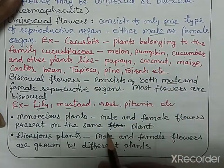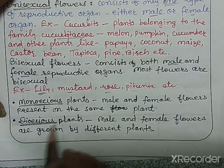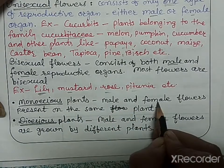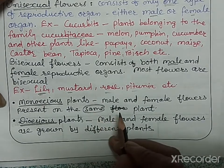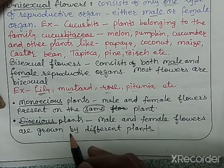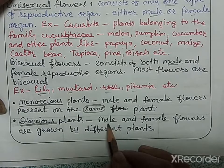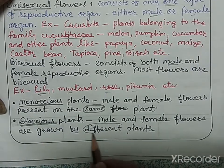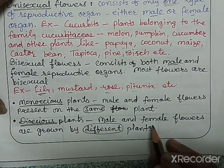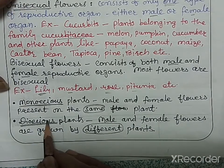You should also know the terms monoecious and dioecious plants. Monoecious plants are those in which male and female flowers are present on the same plant. In dioecious plants, male and female flowers are borne on different plants — one plant grows only male flowers and another grows only female flowers.